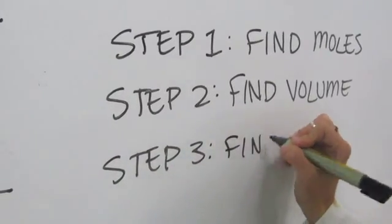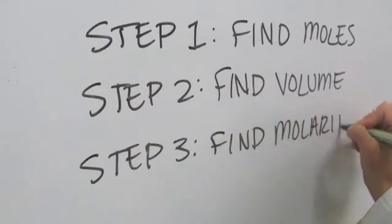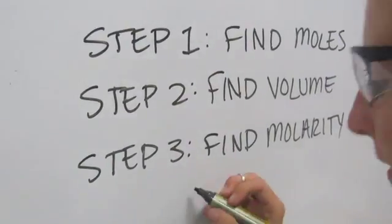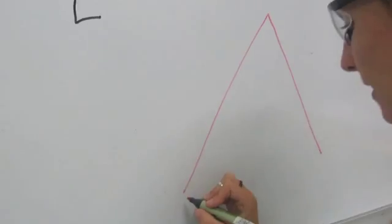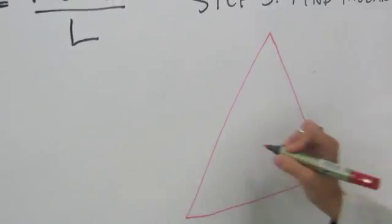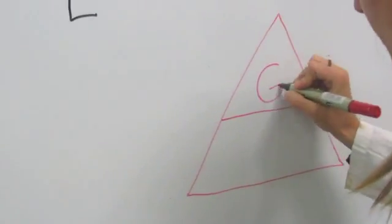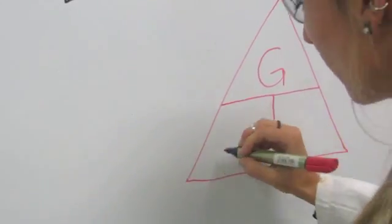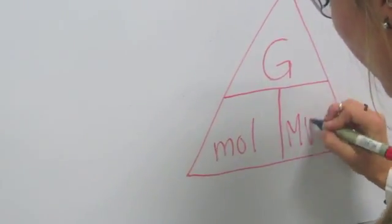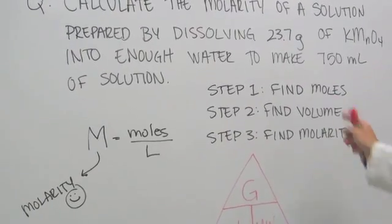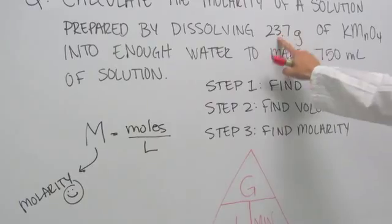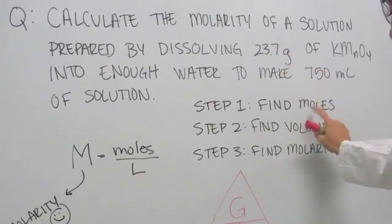Three easy steps. There's a secret to these steps though. We are given grams in the problem but we need to find moles. You ask me how do we do that? Well, a magical chemistry triangle. A magical chemistry triangle. Here we have moles and we need to go from grams to moles.